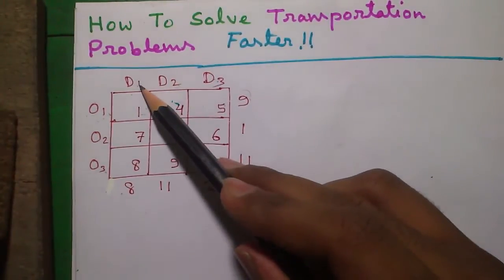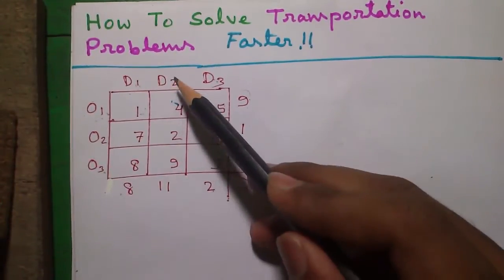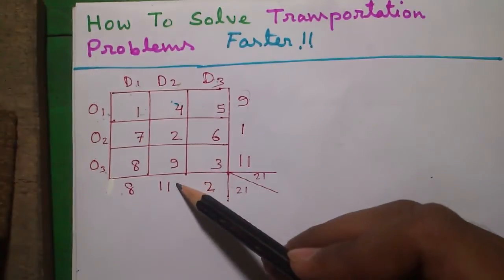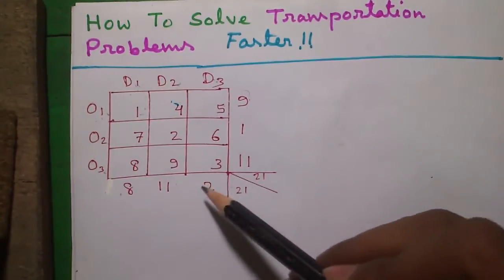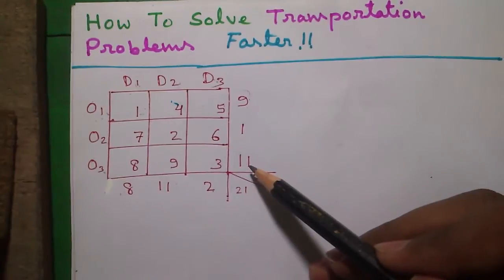And these horizontal values outside are called the demand values. In destination 1 there is a demand of 8 units of goods in total. Similarly in D2 there is a demand of 11 units of goods. So we have to fulfill all the demands by all our supplies in such a manner so that our total transportation cost is minimum. So this was the basic.